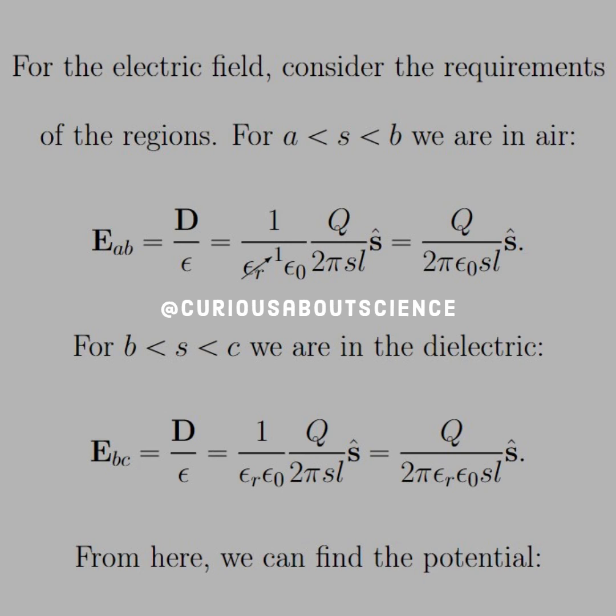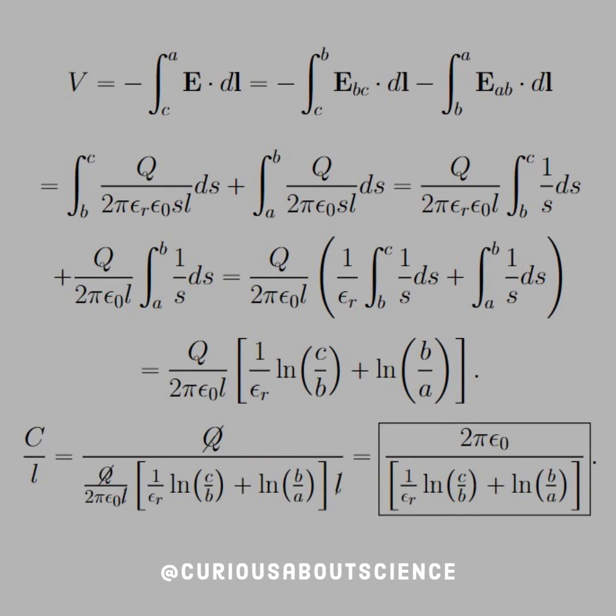From here, we can find the potential, much like last question. We have to work our way from the outside to the inside, and we know that the potential is just a line integral of the electric fields, so we break them down into their respective regions and then substitute in the field for B to C and the field for A to B, and we start simplifying them before we evaluate the integrals, factoring out a lot of the similar terms.